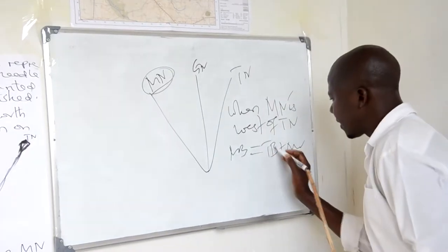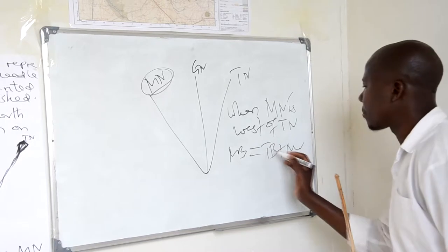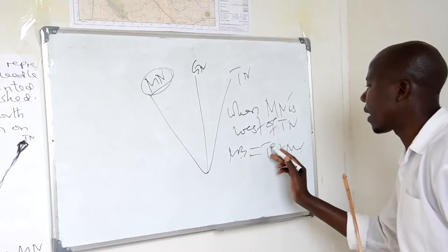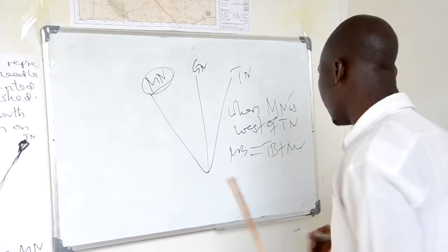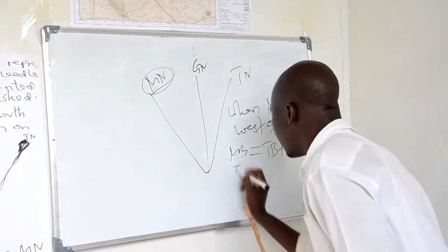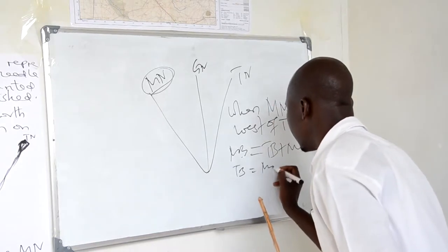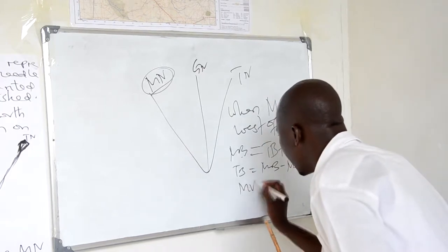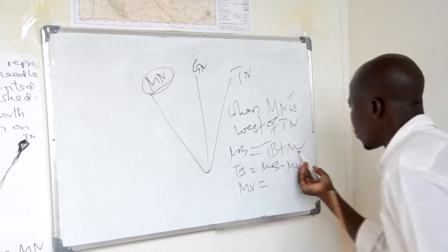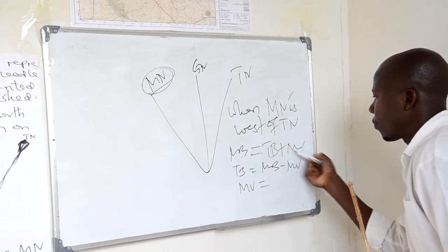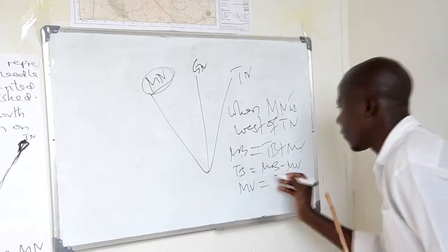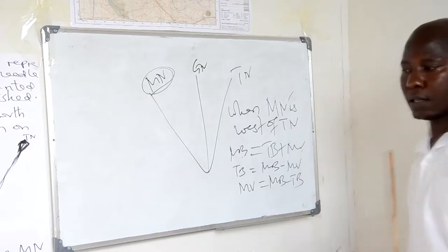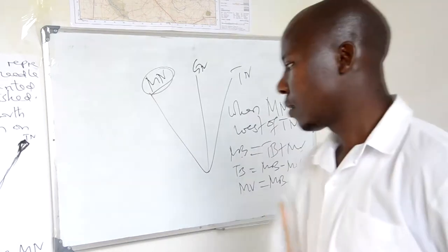In order to obtain true bearing, you substitute the magnetic variation. To make true bearing the subject: true bearing equals magnetic bearing minus magnetic variation. And to obtain magnetic variation: magnetic variation equals magnetic bearing minus true bearing.